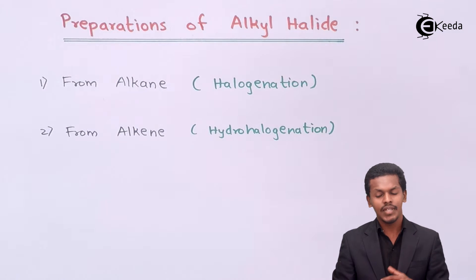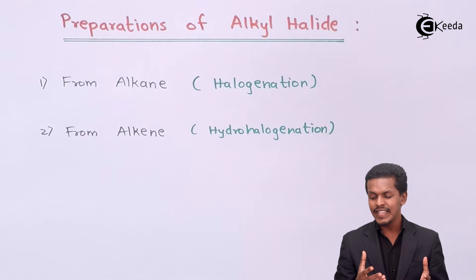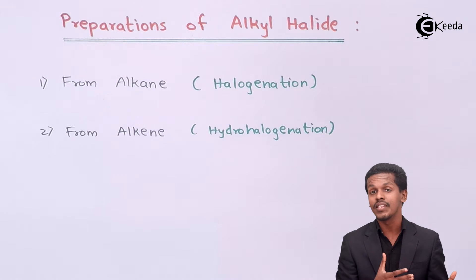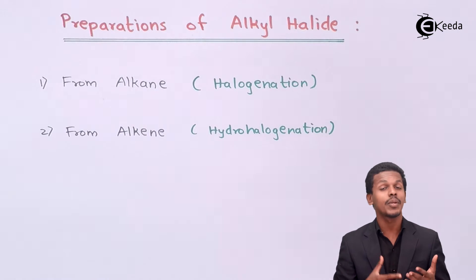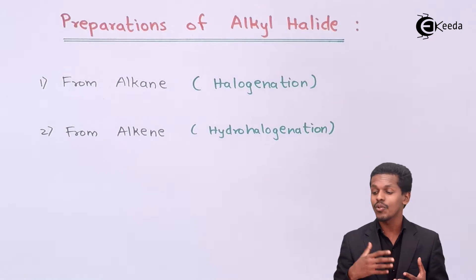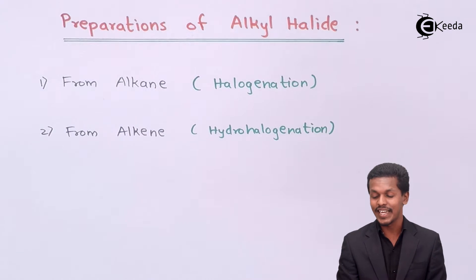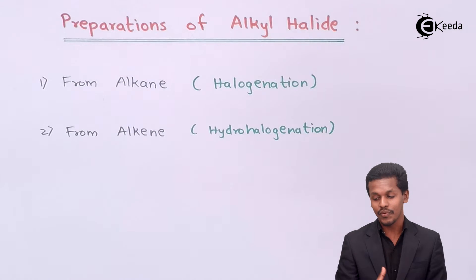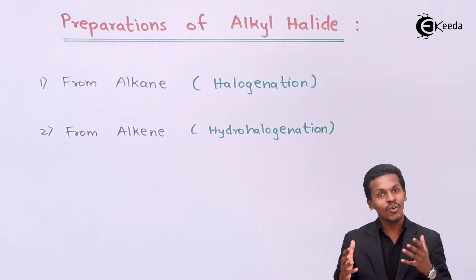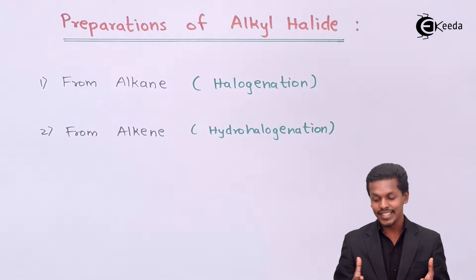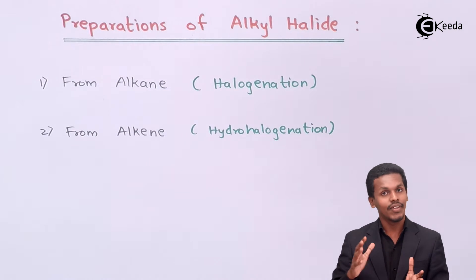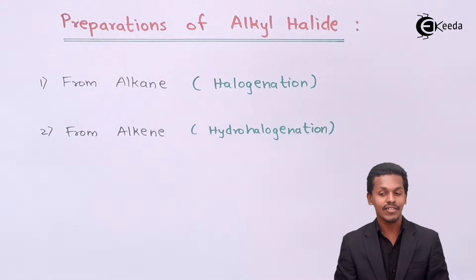Alkenes can be symmetrical or unsymmetrical. Depending on that, during hydrohalogenation they can follow Markovnikov's rule or anti-Markovnikov's rule. The full details and information regarding this will be discussed in the next lecture.